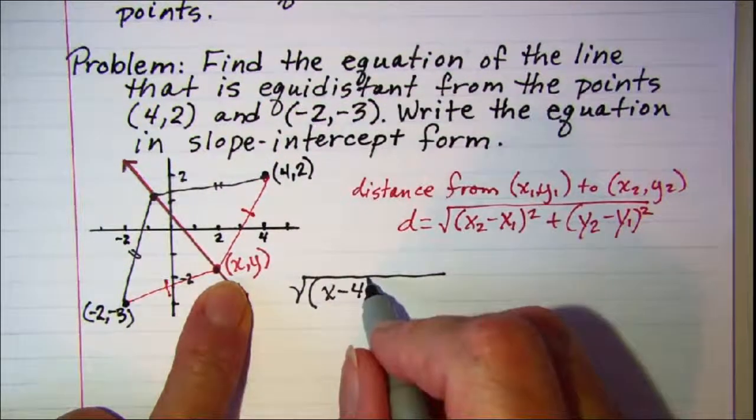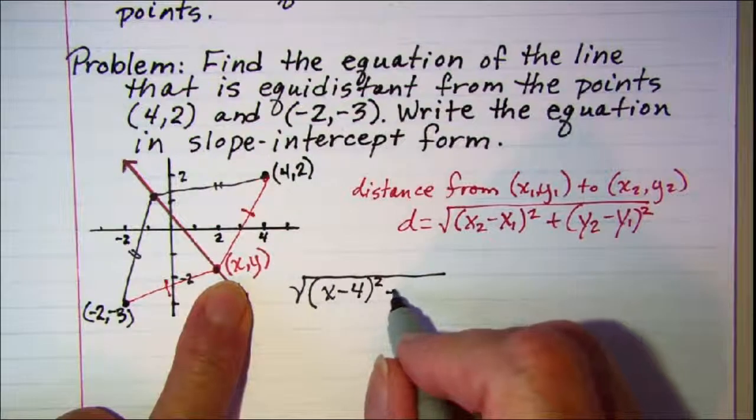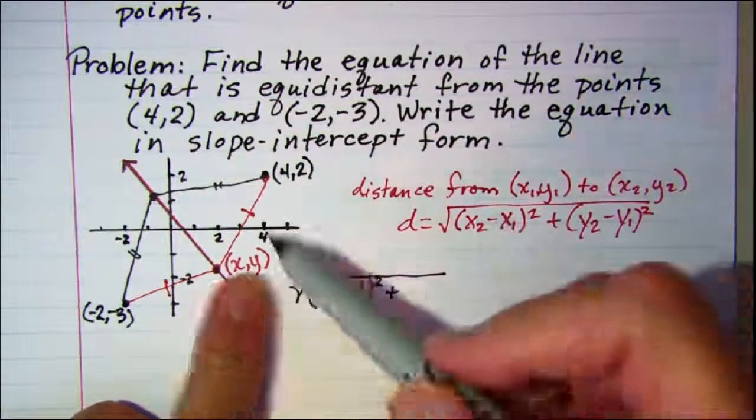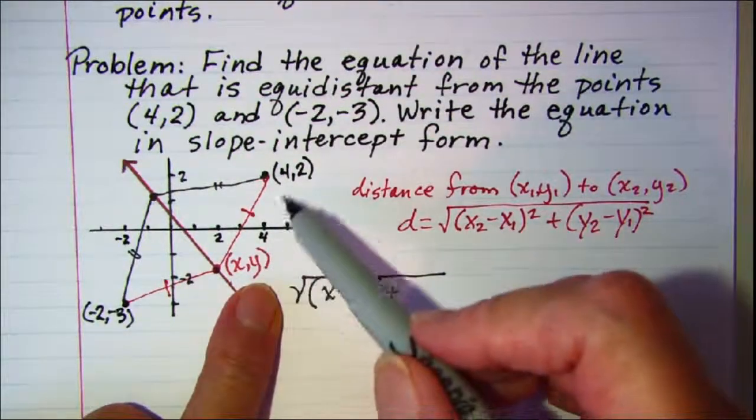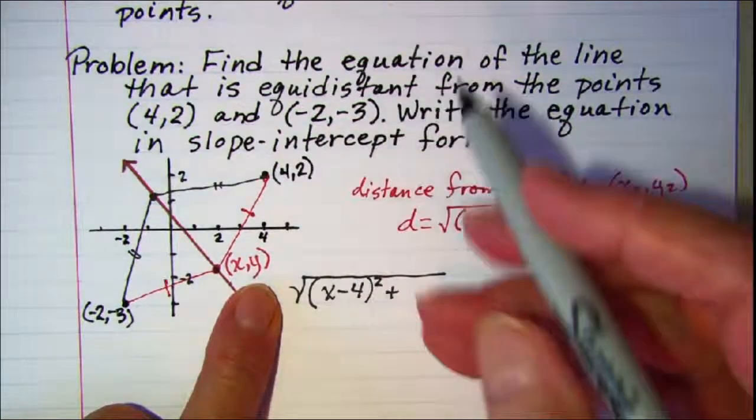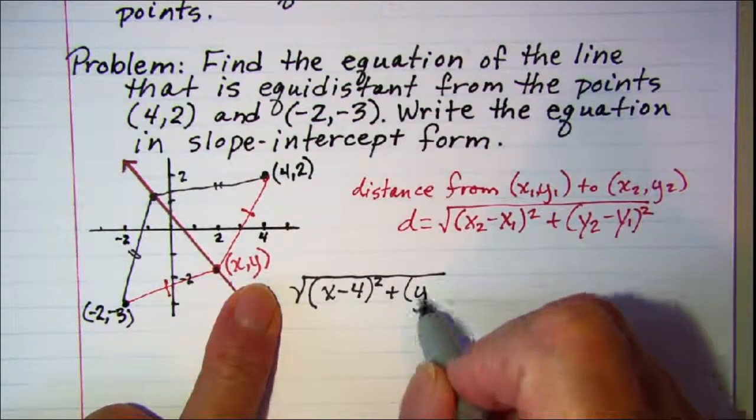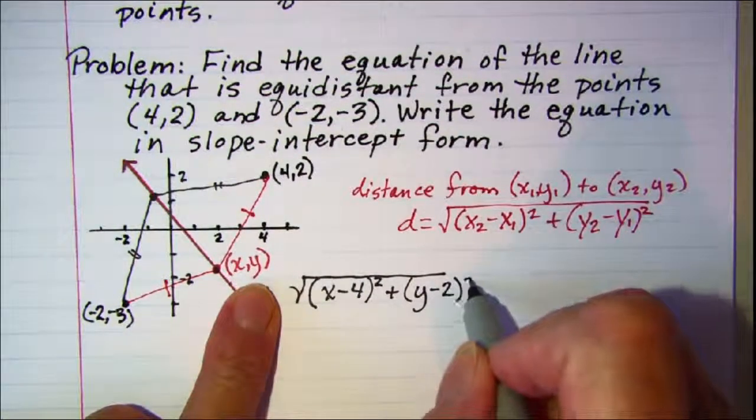And then quantity squared, plus this y coordinate subtract this y coordinate, so (y - 2) quantity squared.